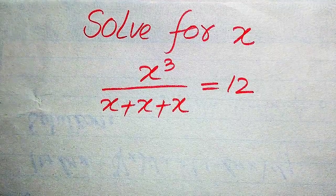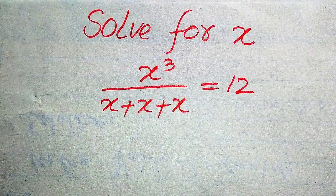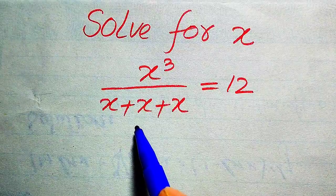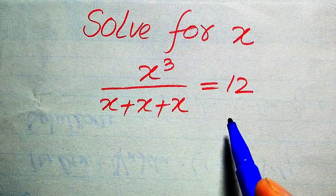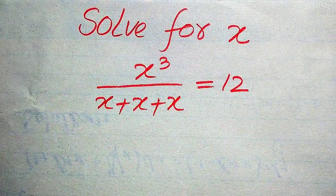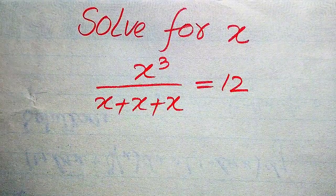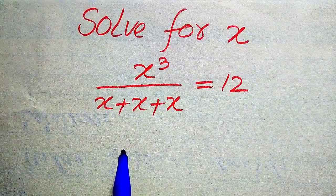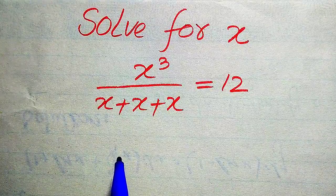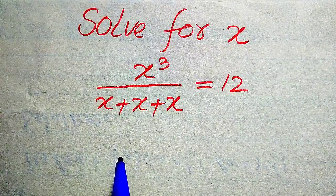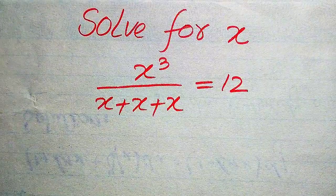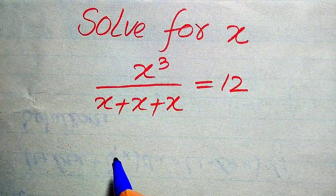Hello everyone. How to solve this problem: find all values of x if x cubed divided by x, plus x plus x, equals 12. We will first find all the roots of this equation, and at the end we will verify which roots are solutions and which are extraneous roots.